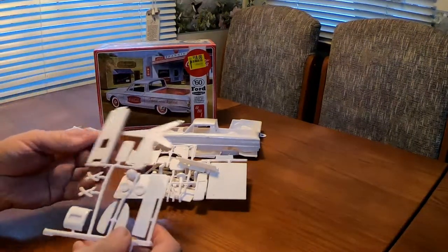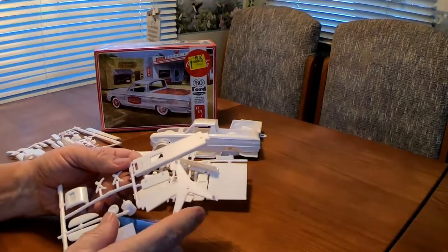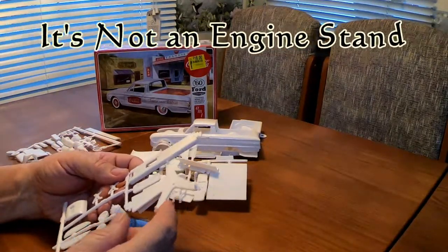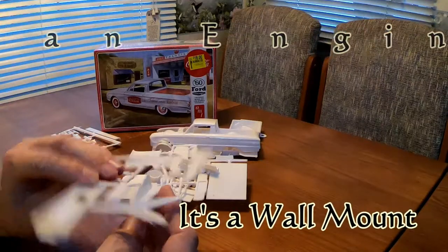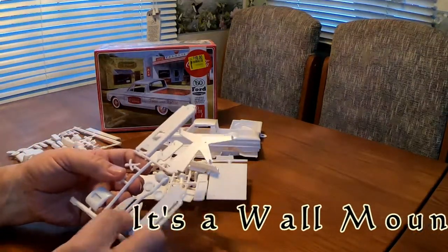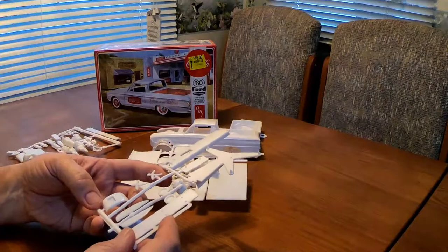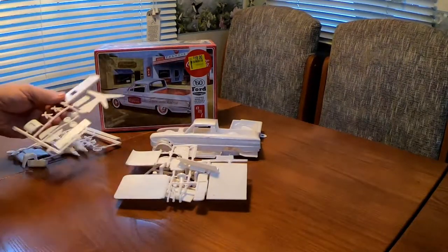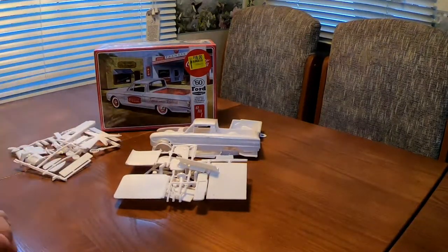On this tree, you get an engine stand. Or I think that's an engine stand. What else could that be for? Yeah. Hmm. Fender skirts. Seat belts. Awesome.